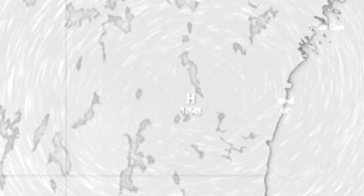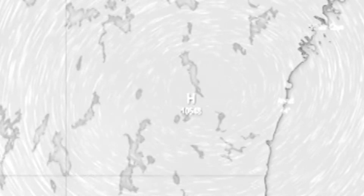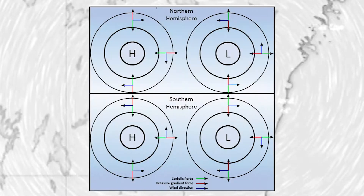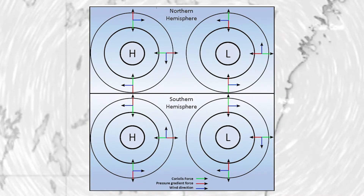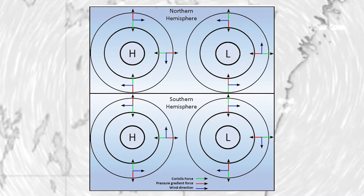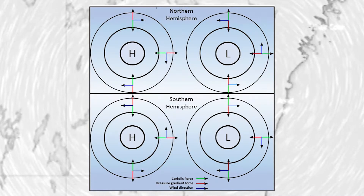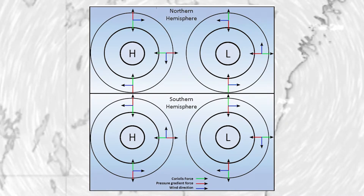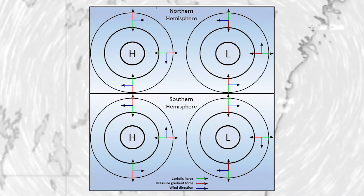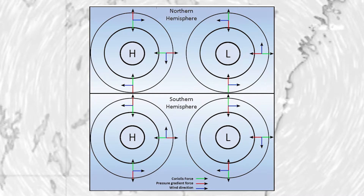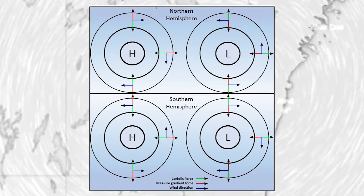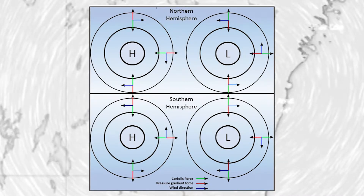Winds are only considered truly geostrophic when the isobars are straight and there are no other forces acting on them. These conditions just aren't found too often in nature.